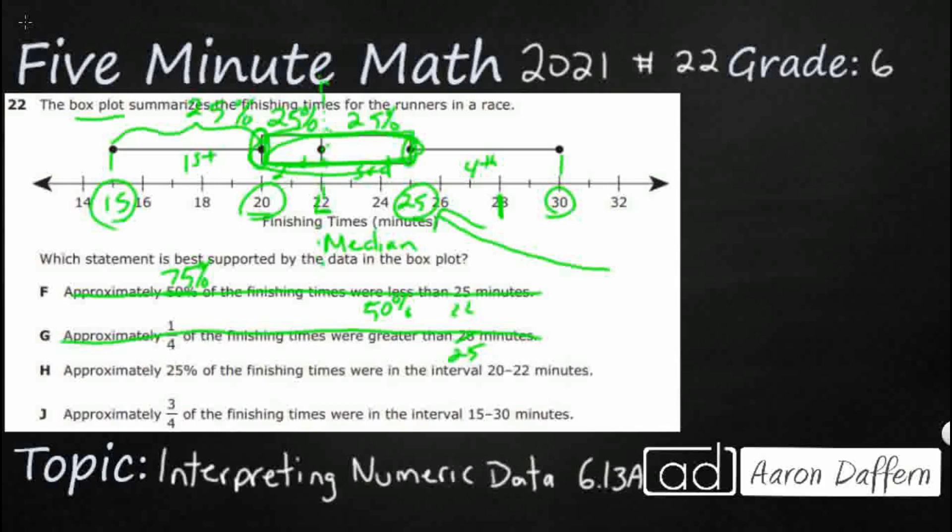H, approximately 25% of the finishing times were in the interval 20 to 22. So this is our second quartile between 20 and 22. And yeah, that does look like 25%. So that's looking pretty good. Let's check J.